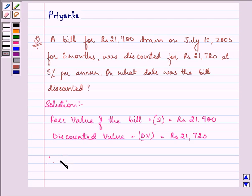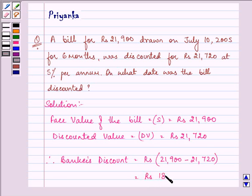So, it means that banker's discount is equal to Rs. 21,900 minus Rs. 21,720, which is further equal to Rs. 180.